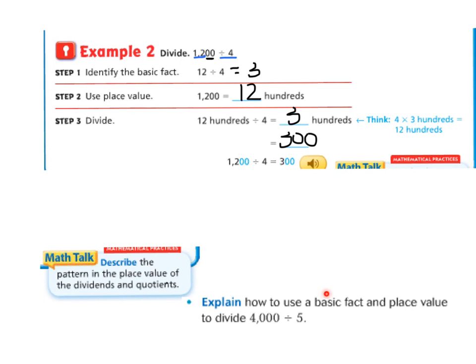Now let's take a look at this example. Can you think about how you would explain to use a basic fact to divide 4,000 divided by 5? Did you find 40 divided by 5? If so, you did a great job. What would that answer be?